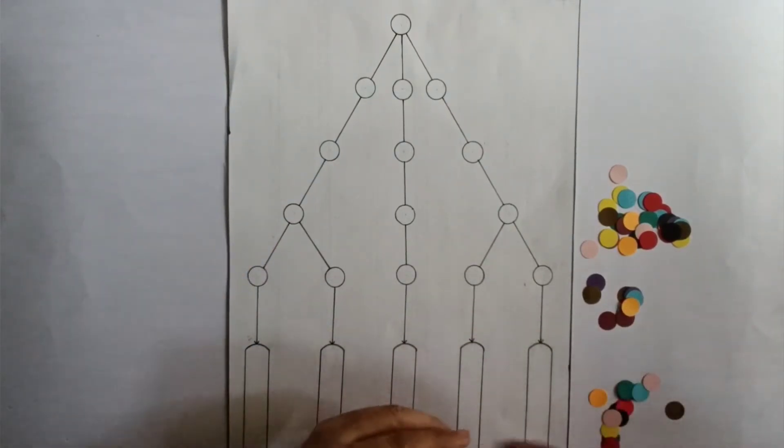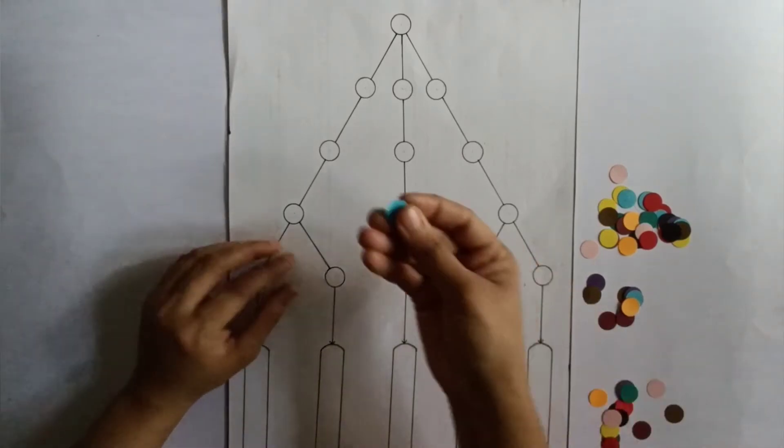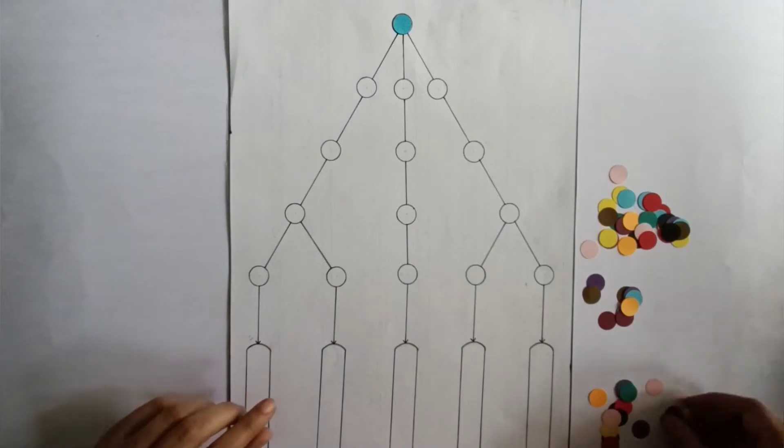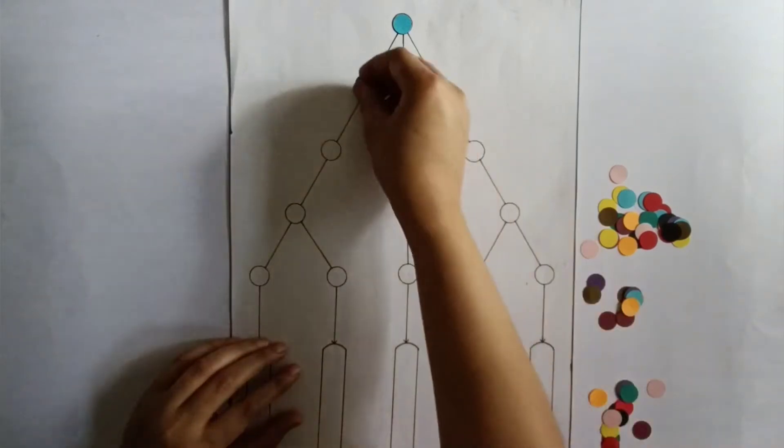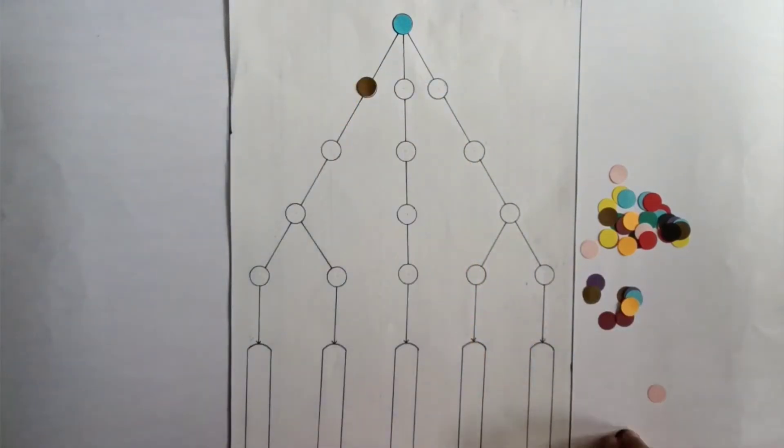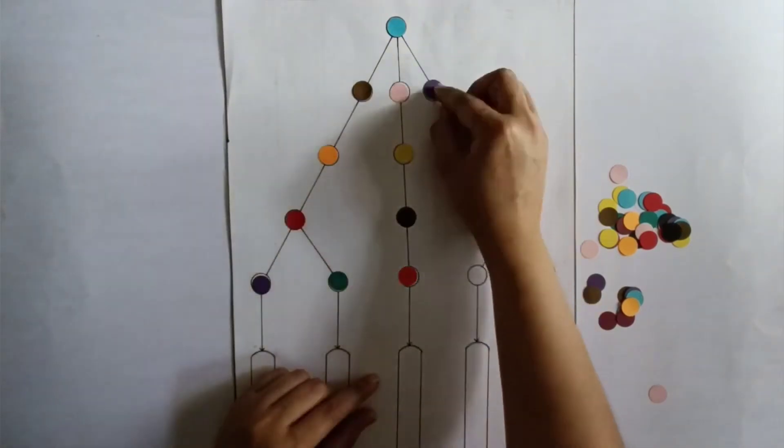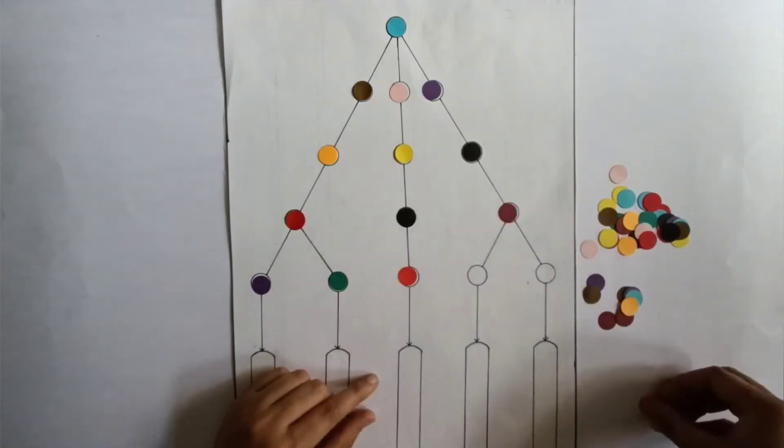I will be placing these colorful circles on the blank circles on our master sheet, like this. I'll be putting all of them one by one. You can choose any random color. Like this, I am putting all of them here.